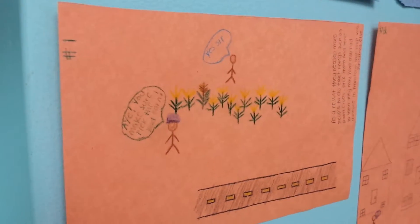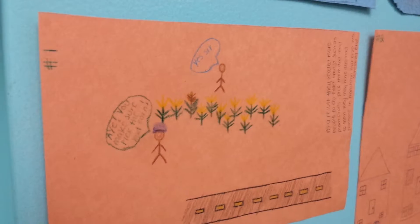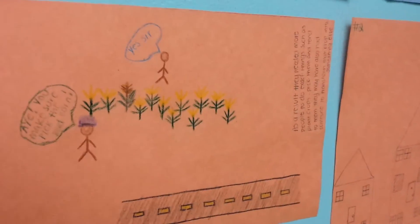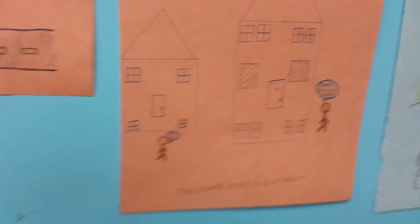As they started to settle down, they started to use agriculture as a way of life, instead of going hunting and gathering. This also formed more social classes, which affected the way people lived, such as bigger houses or smaller houses.